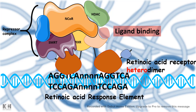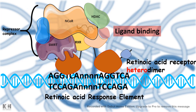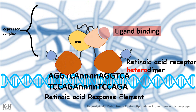When the ligand binds, it leads to a conformational change in the complex. A portion of this complex has E3 ubiquitin ligase activity, which polyubiquitinates a portion of NCoR, targeting it for degradation by the ubiquitin-proteasome pathway. As a result, the co-repressor complex falls off.